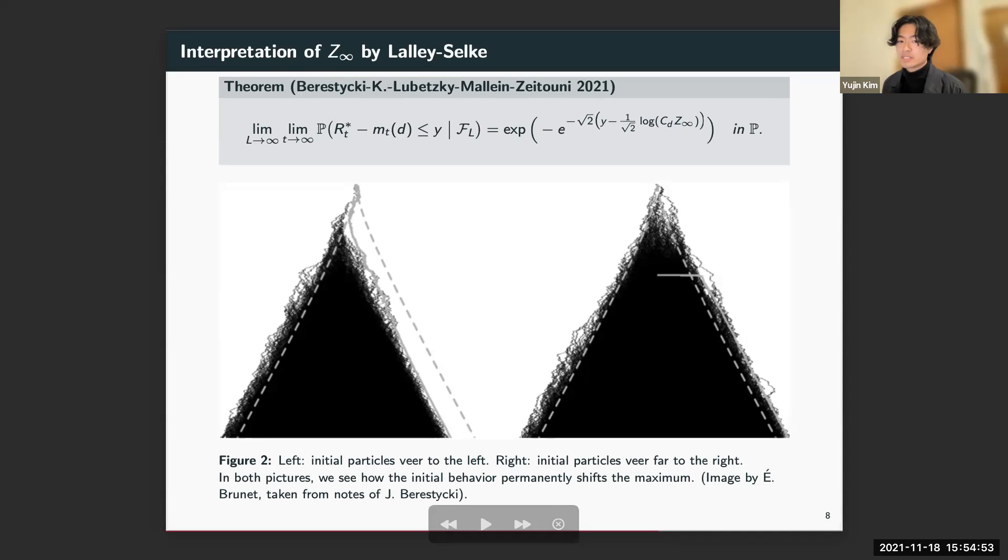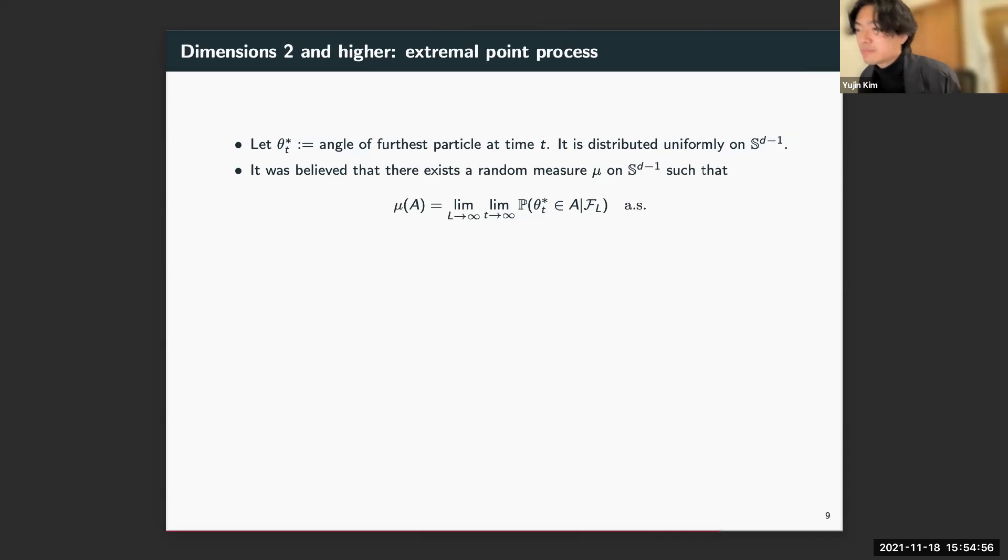That concludes the discussion of the maximum process. Now the next results will concern the entire extremal point process. As a first step towards the extremal point process, let's just consider the angle of the furthest particle at time t. We'll call that angle θ_t^*. Note that by rotational symmetry, it's easy to see that its distribution is just going to be uniform on the sphere. But in the spirit of Lalley and Selke, one might expect a limiting result of this type to hold: you observe the tree at time ℓ, then take the limit as t goes to infinity, and then send ℓ to infinity.